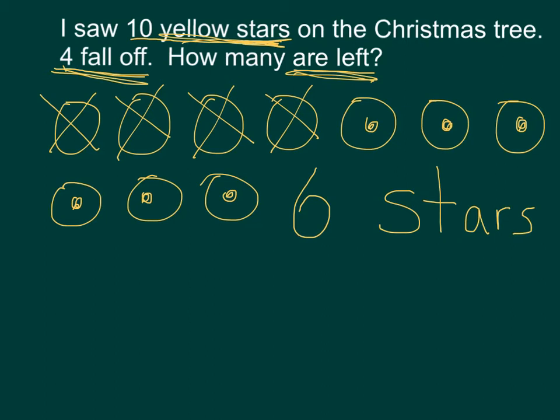I have my picture. I have my answer with my unit or my label. Now I need my number sentence. I start with the biggest number — I started with ten yellow stars. Four fall off. If something falls off, I subtract. Ten minus the four that fell off equals my answer, which was six. How'd you do?